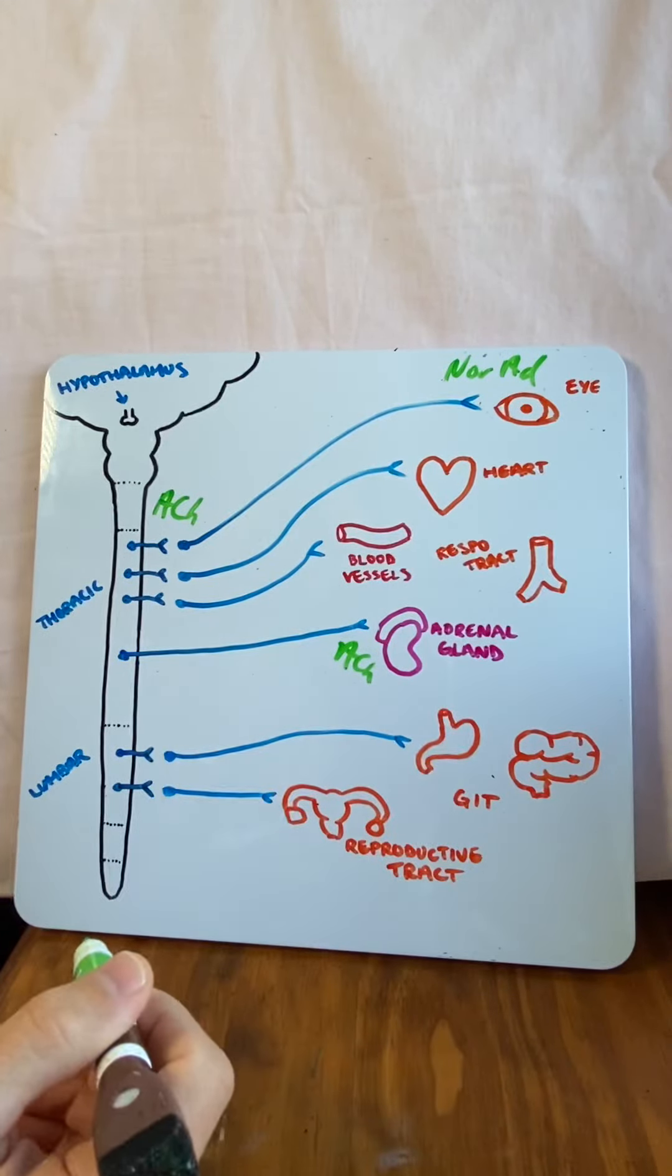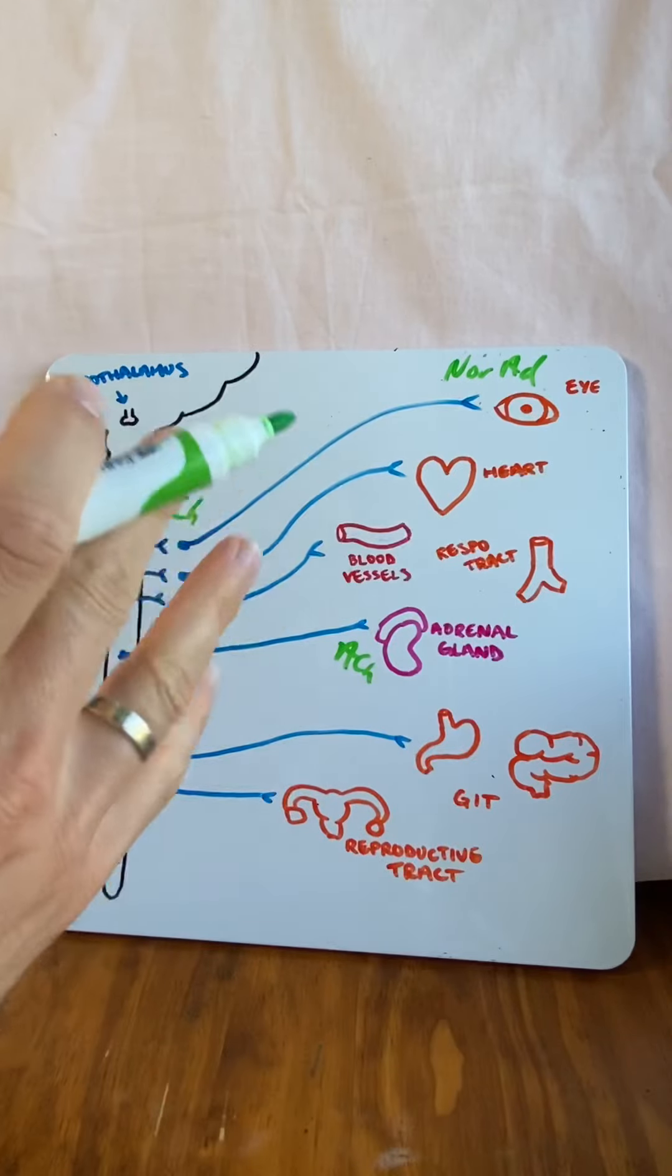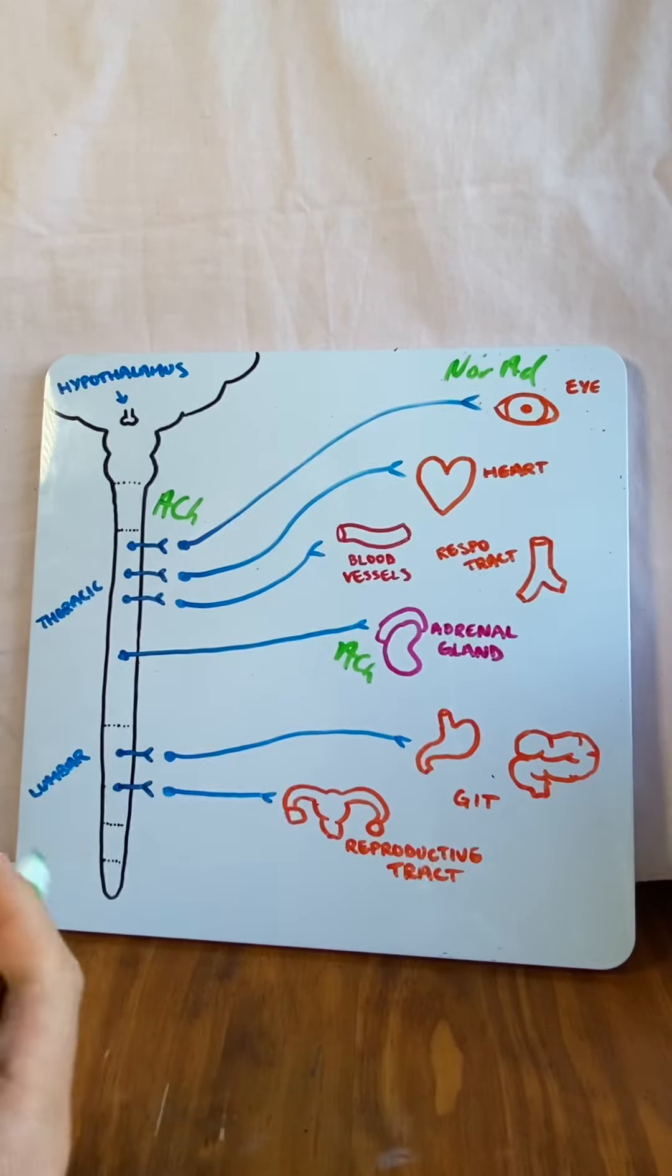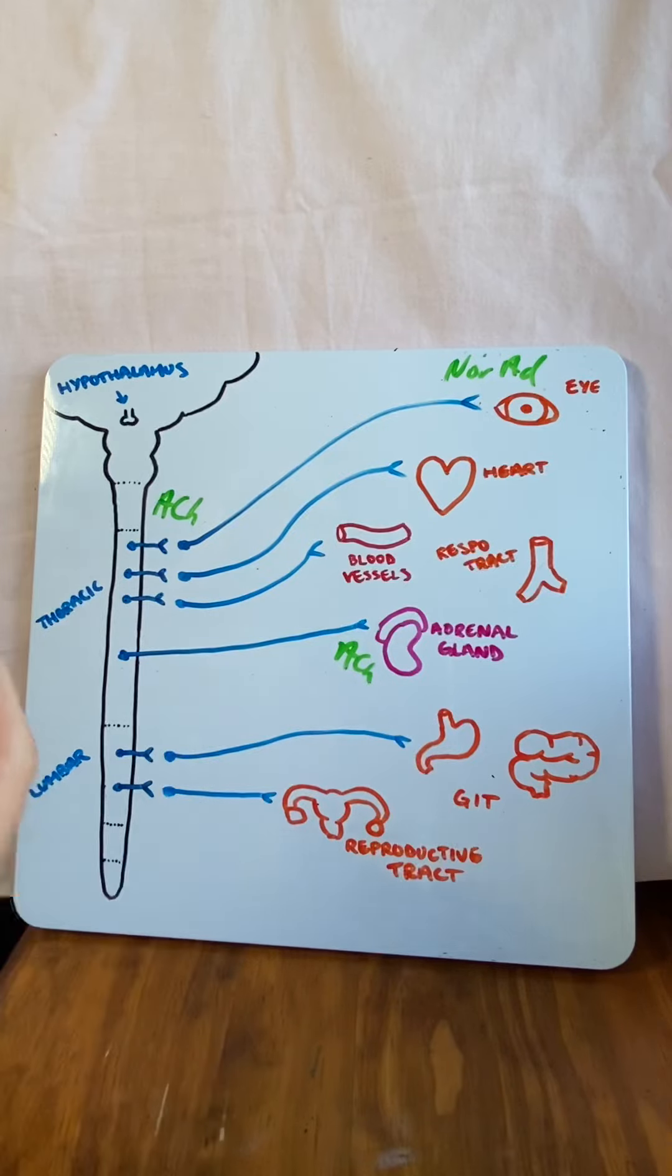In addition to that, cortisol will be released, which is a stress hormone, and that helps release glucose from the kidney and also the liver so we can use for energy. Now, you can see that this is the sympathetic nervous system.